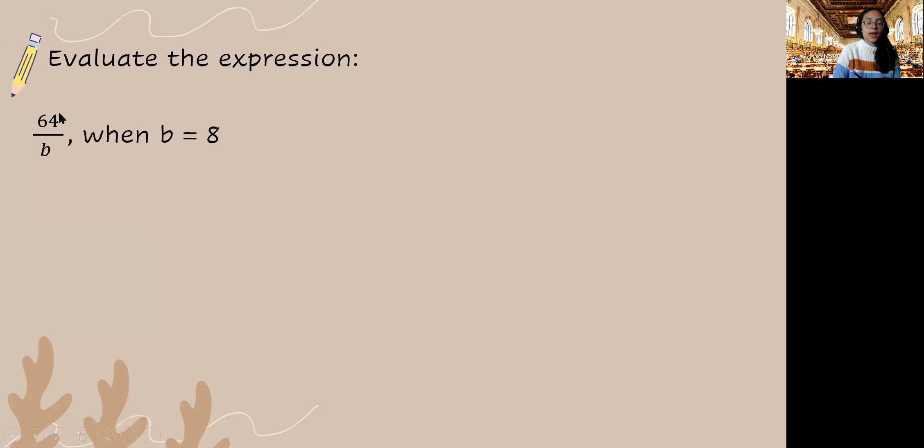For this expression we have 64 divided by b and we're asked to evaluate when b is equal to 8. So we will substitute 8 wherever we see b. So 64 divided by 8. We perform our division and this will be 8. Hopefully all of this is making sense.